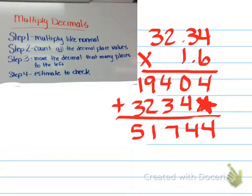All right, so I fast forwarded to the point where I added up all my numbers. So I've done my multiplication just like normal. I did it as if it was 3234 times 16. Now I've got my answer. Obviously my answer is not going to be 51,744. I'm going to need to do the second step where I count all the decimal places. So now I'm going to do this step. One, two, three. There are three total decimal places.